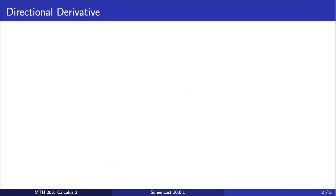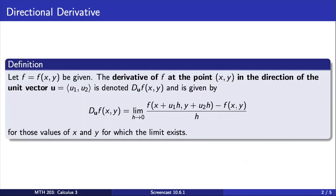The partial derivatives of a function tell us the instantaneous rate at which the function changes only in specific directions. In this screencast, we will introduce the directional derivative, which allows us to measure the rate at which a function changes in any direction.